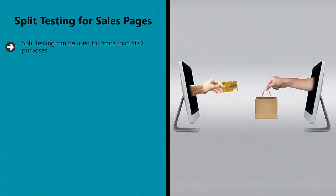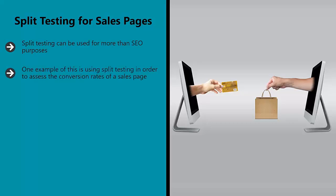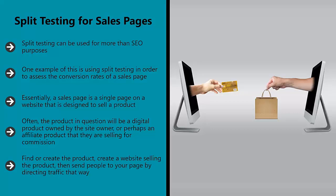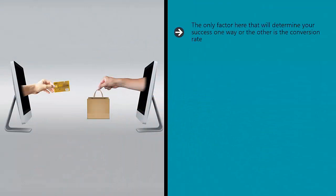Split testing for sales pages. Split testing can be used for more than SEO purposes. One example of this is using split testing in order to assess the conversion rates of a sales page. Essentially, a sales page is a single page on a website that is designed to sell a product. Normally this works by providing a whole lot of text, often in a vertical pillar, that explains the virtues of the product and slowly reels the reader in until they are overcome with the urge to click buy. The conversion rate — what percentage of people who visit your site end up clicking on your buy now button and placing an order — is the crucial factor that determines your profits.